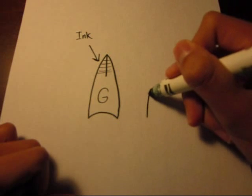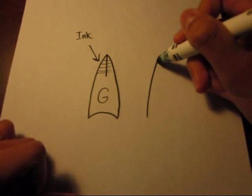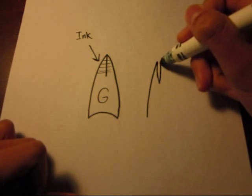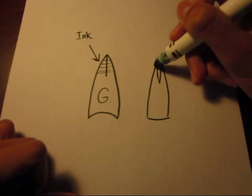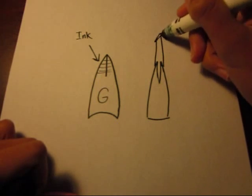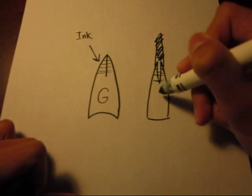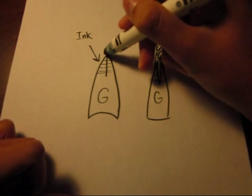Now if you press the G-pen harder on paper, the pen would become like this. The two ends would separate, thus making the line wider.